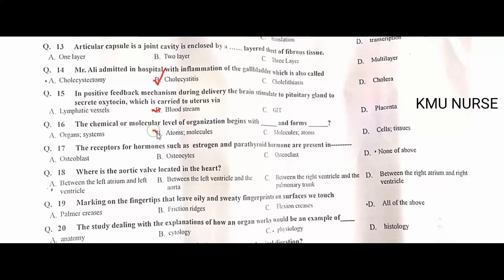The receptors for hormones such as estrogen and thyroid hormone are present in osteoblast cells — C is the correct option. The aortic valve is located in the heart between the left ventricle and the aorta — B is the correct option.